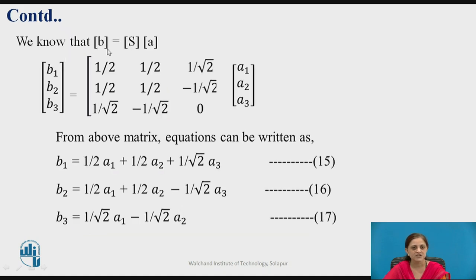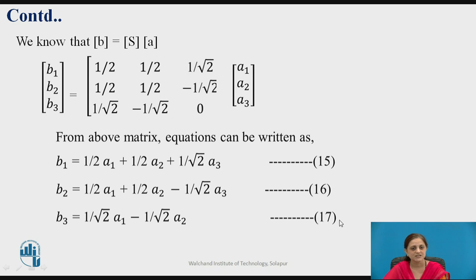Now, to calculate the output values, consider the output matrix B. The column matrix B, known as the output matrix, equals the scattering matrix multiplied with the input column matrix. B1, B2, B3 are the outputs at ports 1, 2, and 3, multiplied with inputs A1, A2, A3 applied to ports 1, 2, and 3. Solving this matrix gives equations 15, 16, and 17: B1 = (1/2)A1 + (1/2)A2 + (1/√2)A3; B2 = (1/2)A1 + (1/2)A2 - (1/√2)A3; and B3 = (1/√2)A1 - (1/√2)A2.